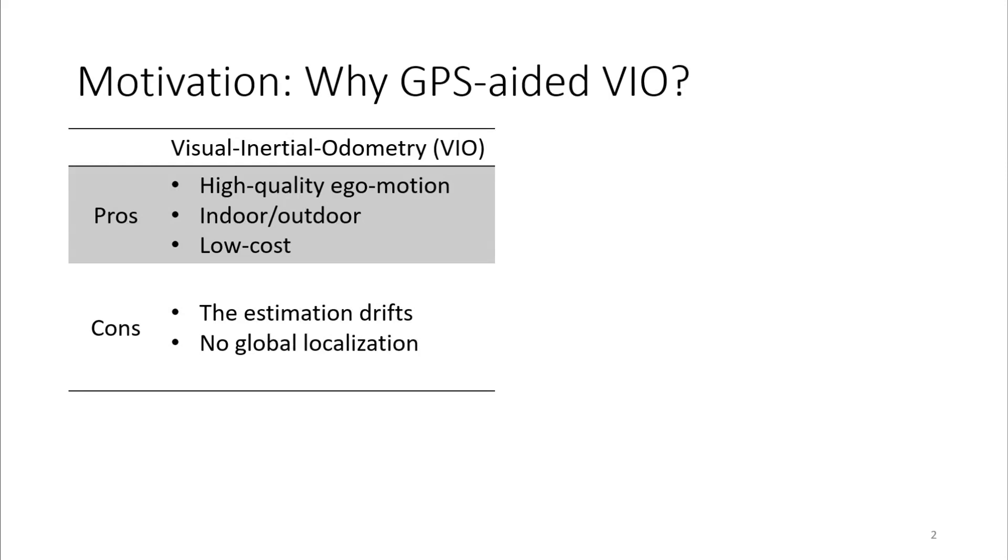Visual Inertial Odometry (VIO) and Global Positioning System (GPS) have complementary characteristics. VIO can provide high-quality ego-motion information, indoor and outdoor, with low system build cost. However, the estimation drifts over time because of accumulated relative pose errors.